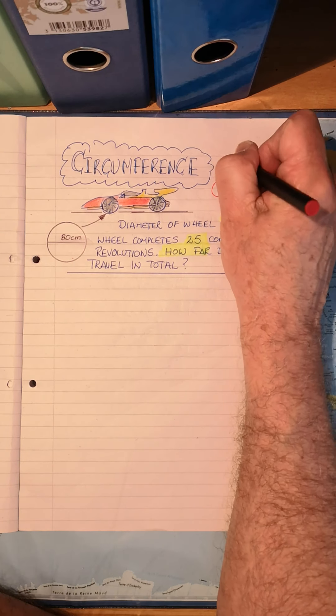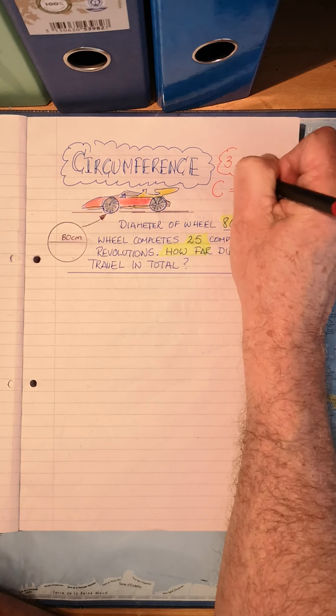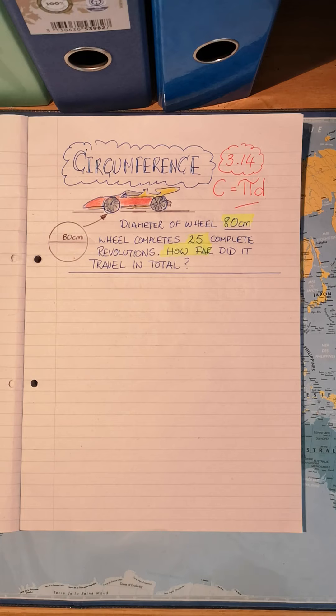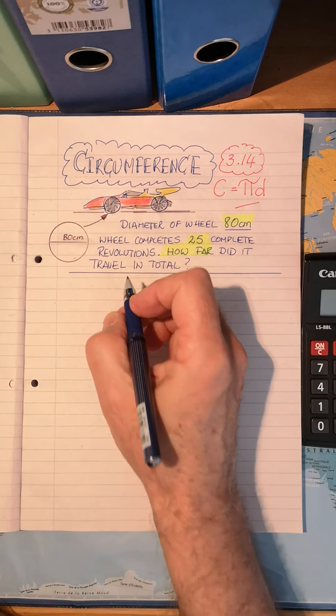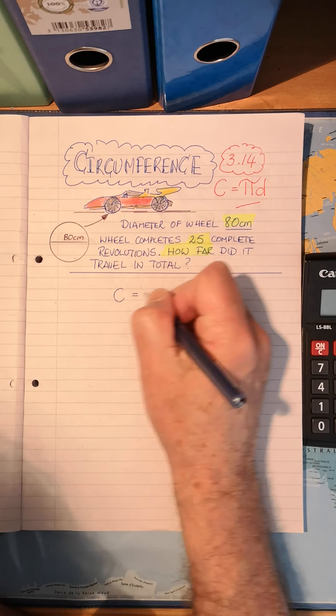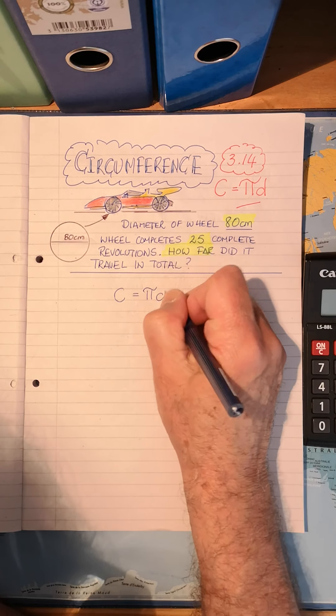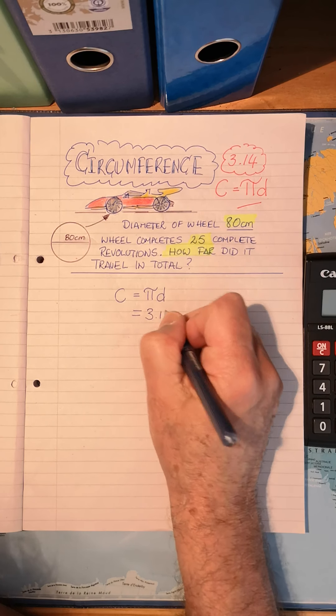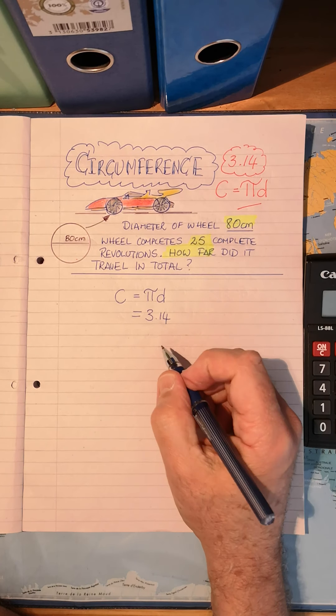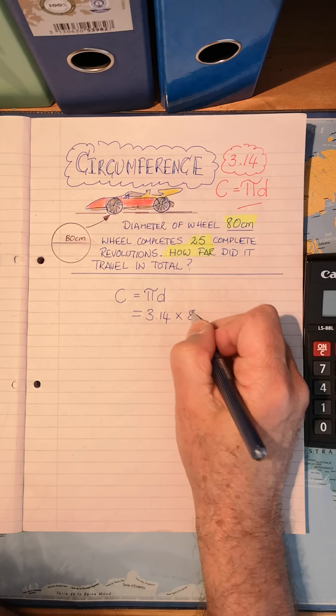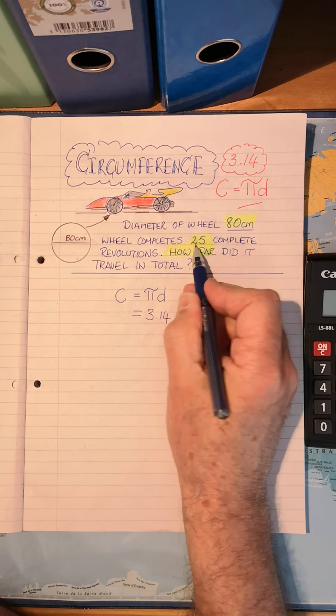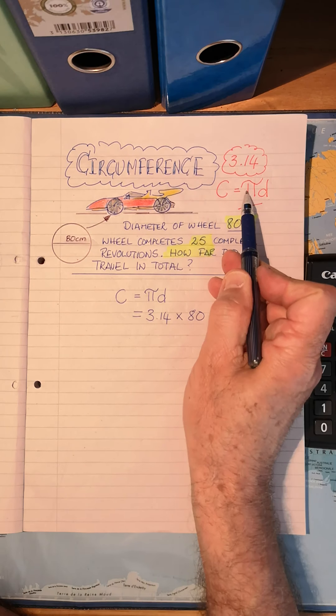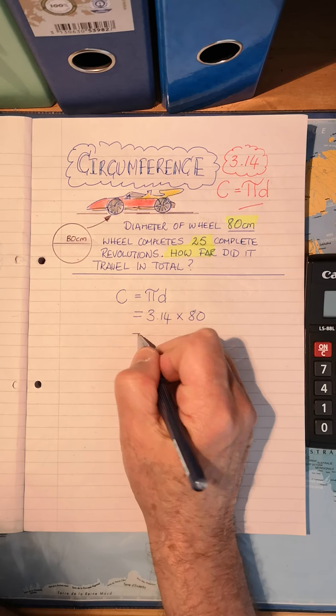Using my formula, pi is 3.14 as suggested in earlier videos. Write out the formula each time. The circumference: pi is 3.14, the diameter is 80. Not dealing with 25 at all yet. The diameter is 80, pi is 3.14.